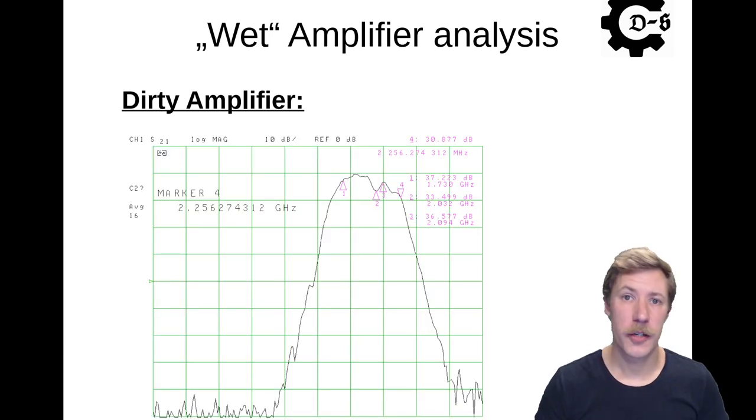And as the S21 plot shows here, we can see that the bandwidth is still between 1.7 and 2.2 GHz, but the overall gain and average gain is some 1 to 2 dB below the cleaned up amplifier.